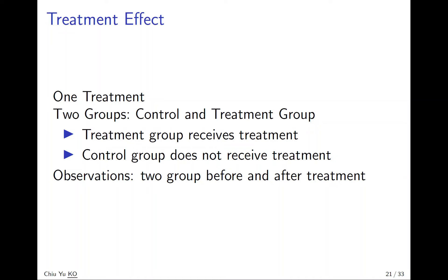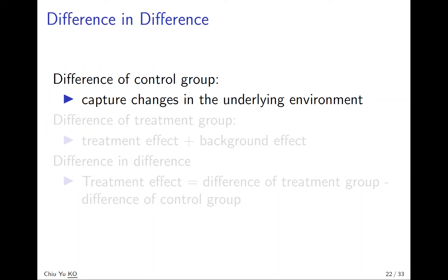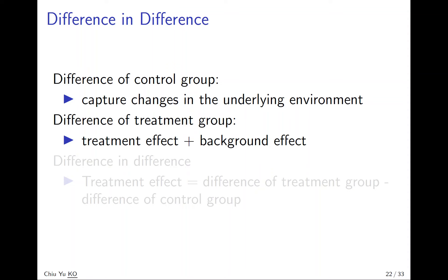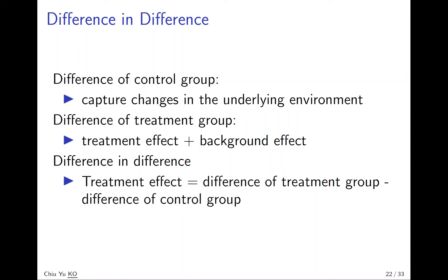We have a control group and a treatment group. The control group captures changes in the underlying environment — the background effect. The difference in the treatment group has two components: the treatment effect and the background effect. The background effect is captured by the control group. So you take the difference of these two to filter out the treatment effect. The treatment effect is the difference of the treatment group minus the difference of the control group — that's why it's called difference-in-differences.